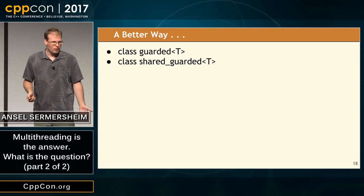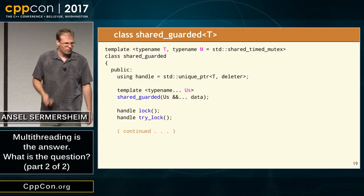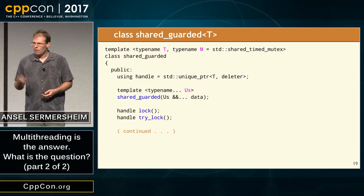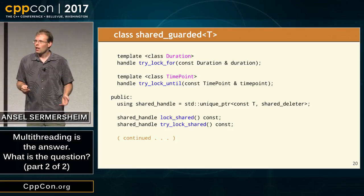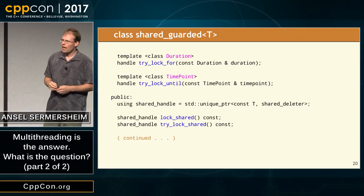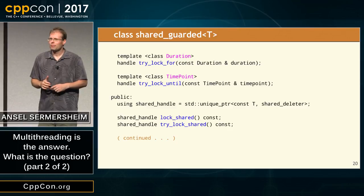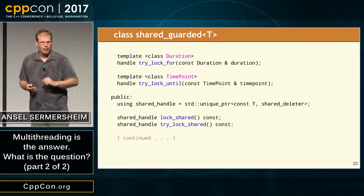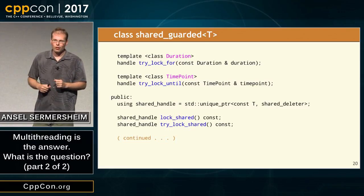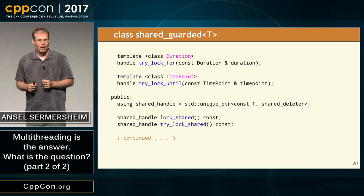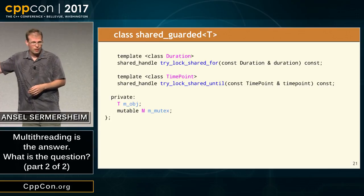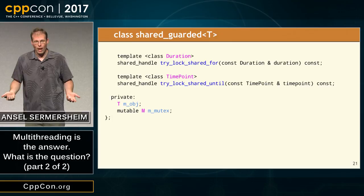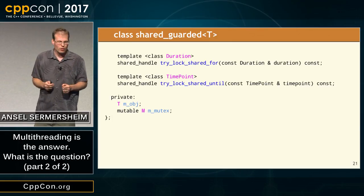For example, shared_guarded is a generalization of guarded to read-write access. It has a very similar implementation to the previous one, but our mutex M is a shared mutex. We have the standard lock and try_lock, and also lock_shared and try_lock_shared, which return a shared handle. What's the difference between a handle and a shared handle? Constness. If you acquire a shared handle to a shared resource, it's const — you can't modify the data. This is a zero-cost abstraction, because we needed the mutex and the object anyway. This is just encapsulating them to give us better syntax for dealing with shared resources.